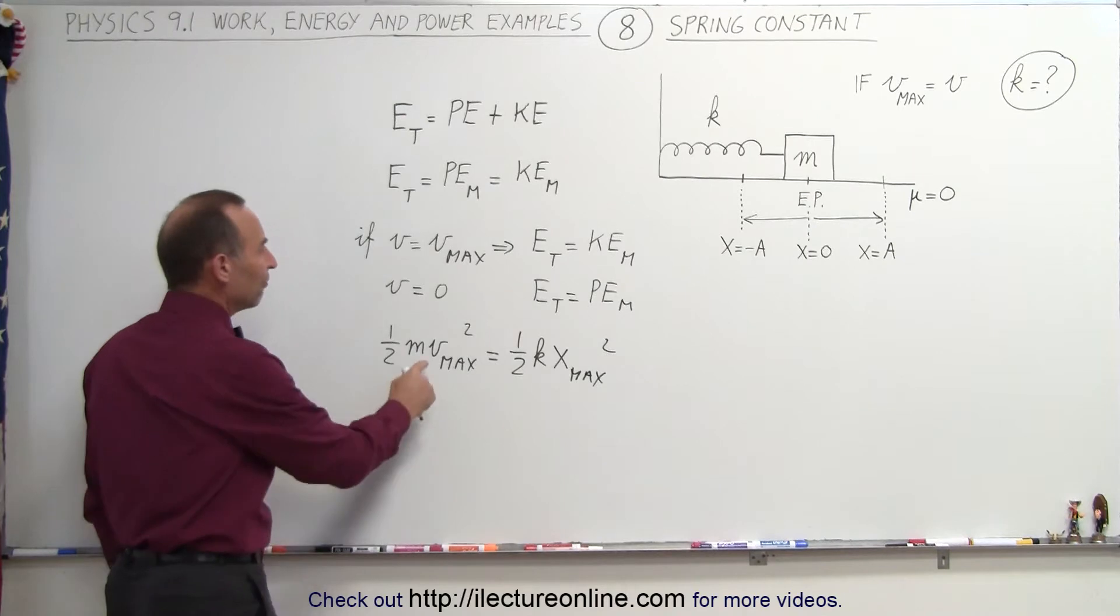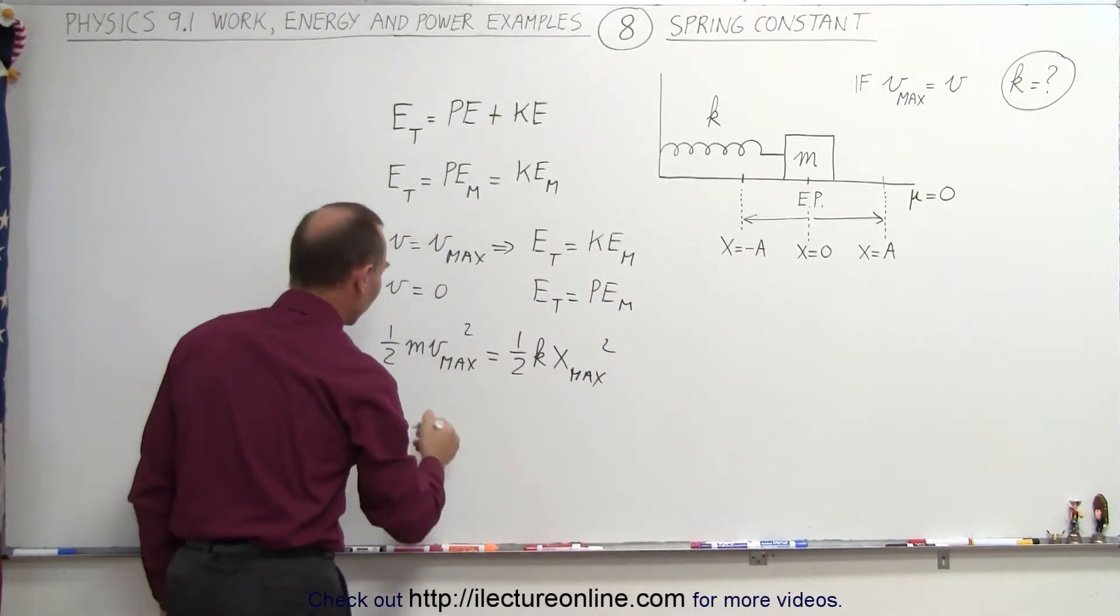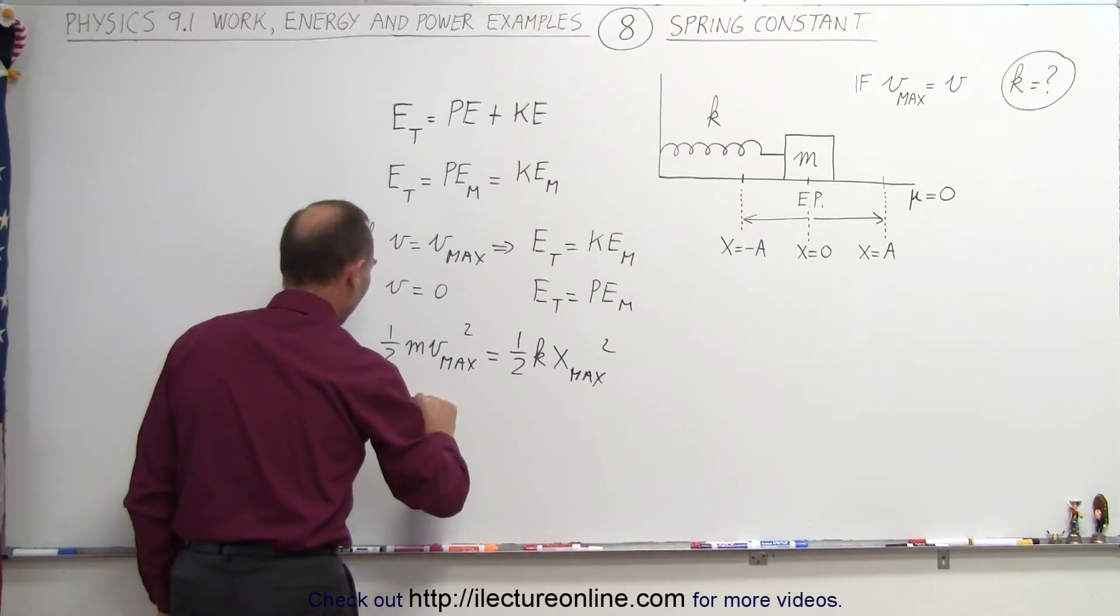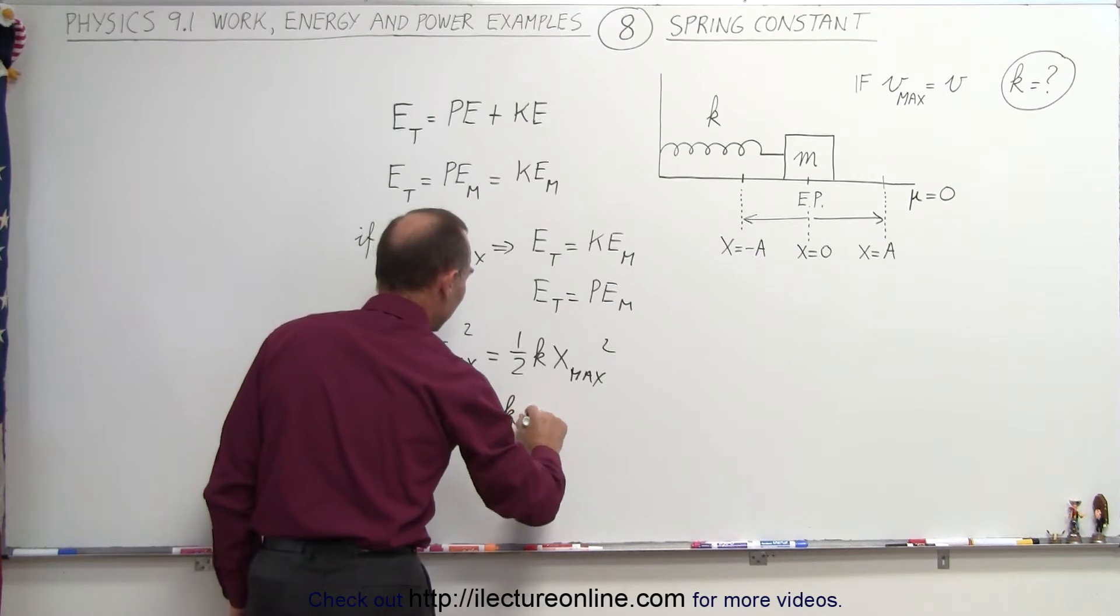and since we can write v max as v and x max as the amplitude A, we can then write this as one-half m v squared equals one-half k A squared.